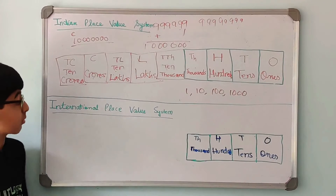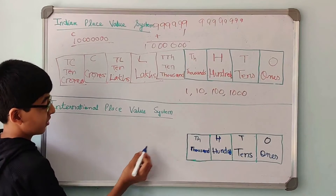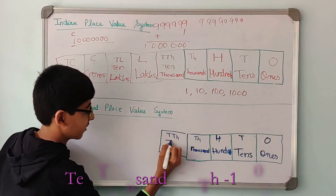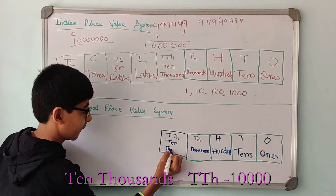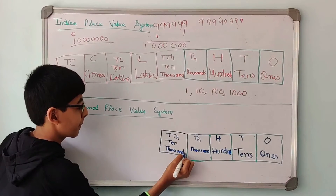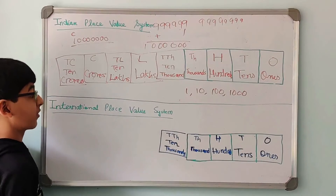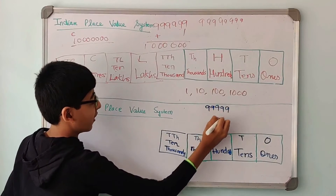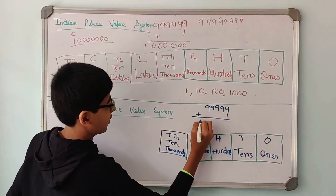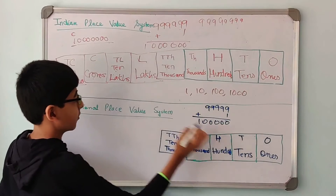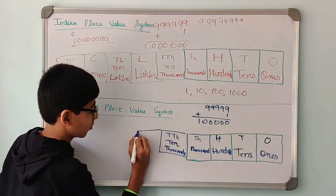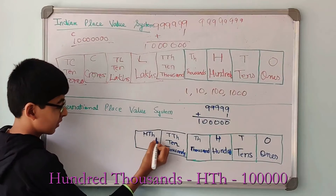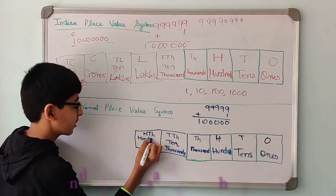Now we are going to start with the International place value system. This is 1,000. After this, like in the Indian place value system, it is TTH — that is 10,000. The values might remain the same in both systems, but the names might be different. So let's add 99,999 with a 1. In the Indian place value system, this number is called 1 Lac. But in the International place value system, it is called 100,000, written in short as HTh (capital H, capital T, small h).